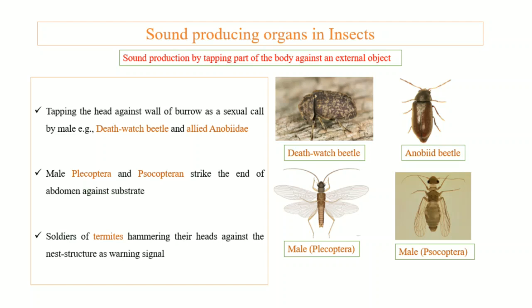First, let's discuss sound production by tapping a body part against an external object. The death watch beetle, belonging to the NOBD family, has males that strike their head against the wall of their burrow. This is mainly a sexual call by the male, produced during courtship display as a mating call by tapping their head. Similarly, male Plecoptera and Psocoptera strike their abdomens against a substrate.